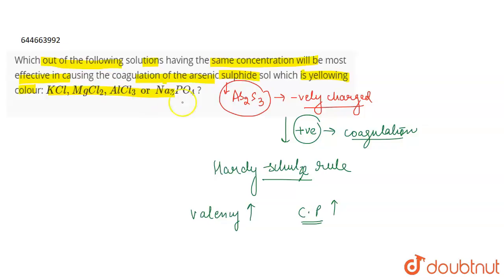So as we require a positive charge in this case, the greater valency of the positive charge will lead to a greater coagulating power. If we talk about all these electrolytes here, the positive charge in KCl is K+, the positive charge in MgCl2 is Mg2+, positive charge in AlCl3 is Al3+, and in Na3PO4 this is Na+ because that is PO4 3-.